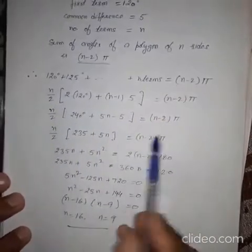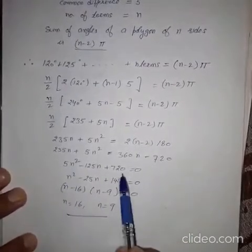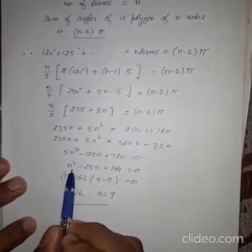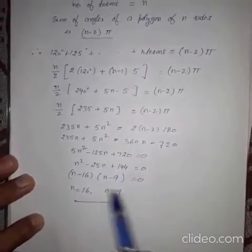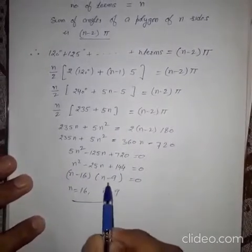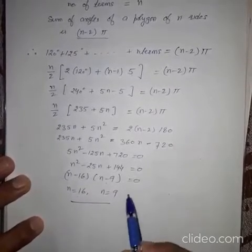So, you can simplify this. You will form a quadratic equation. This is quadratic equation. And after dividing it by 5, we have N square minus 25N plus 144. And using splitting middle term method, it is N minus 16 into N minus 9. And value of N is 16 and value of N is 9.